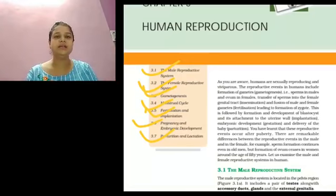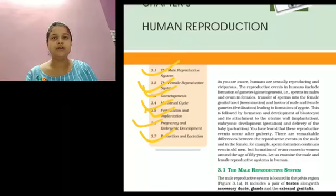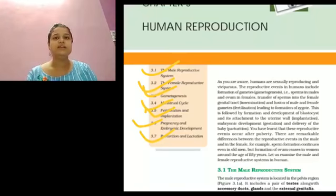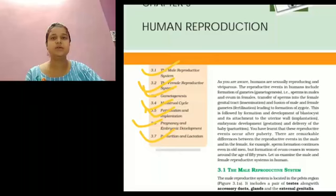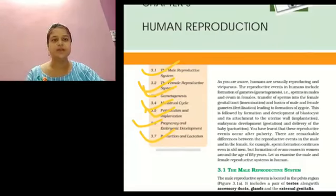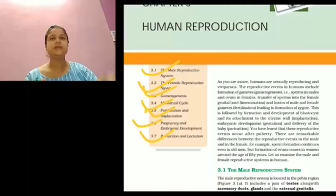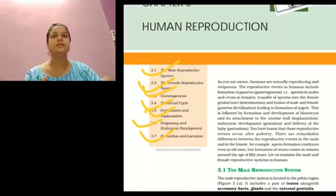Reproduction is the process of giving birth to their young ones which are identical to their parents. We are all aware of the process of reproduction in humans, sexual reproduction which involves fertilization by sexual intercourse. Now we are discussing about human reproductive system.